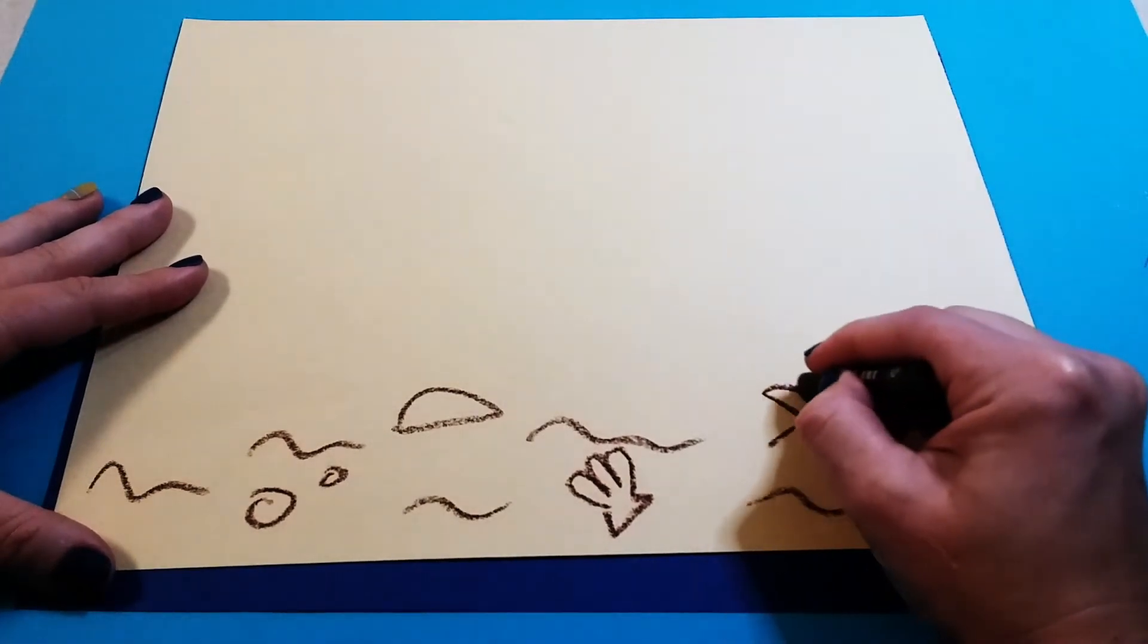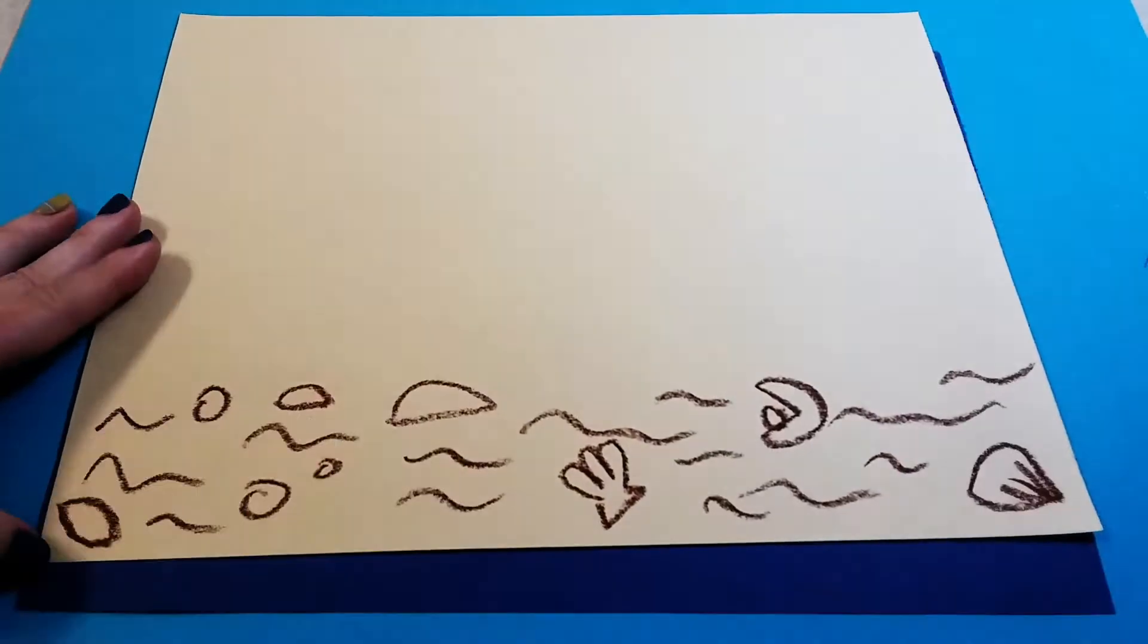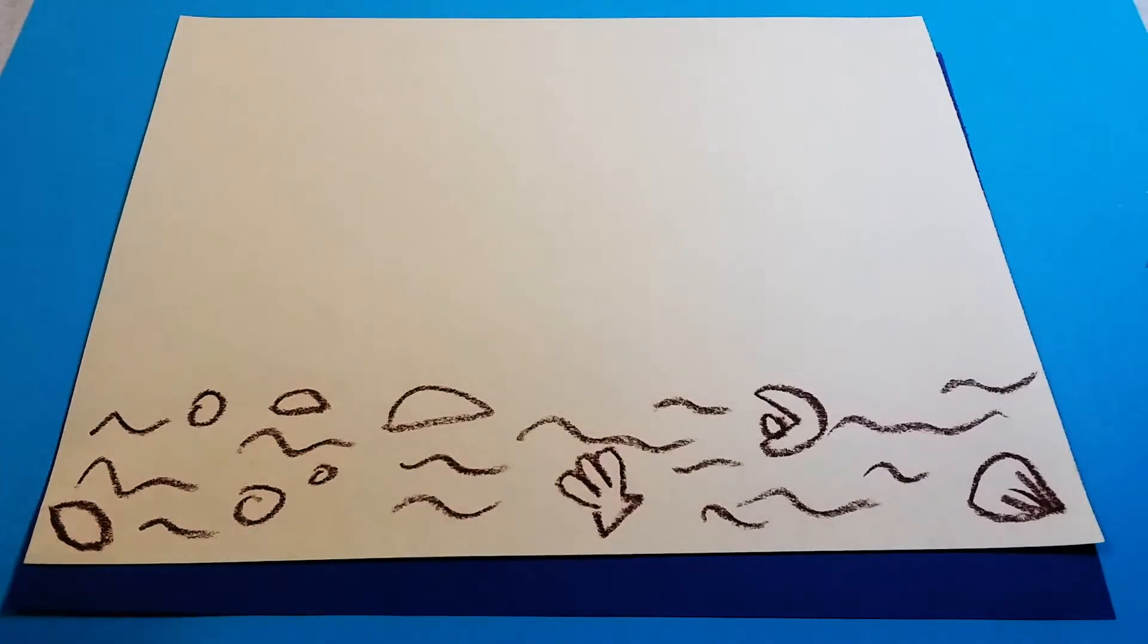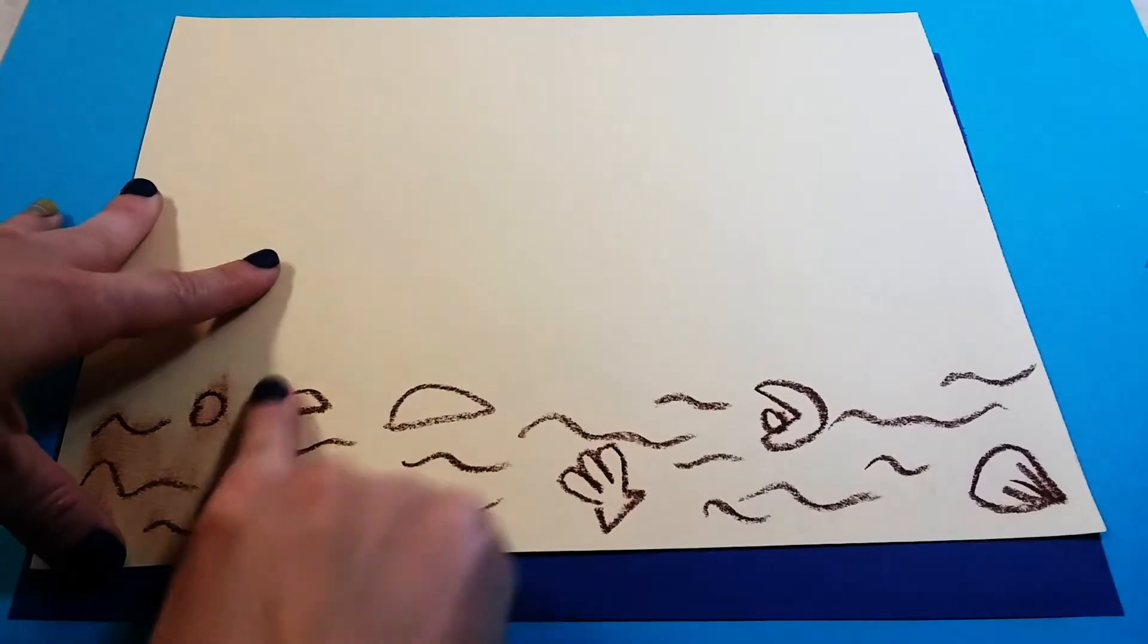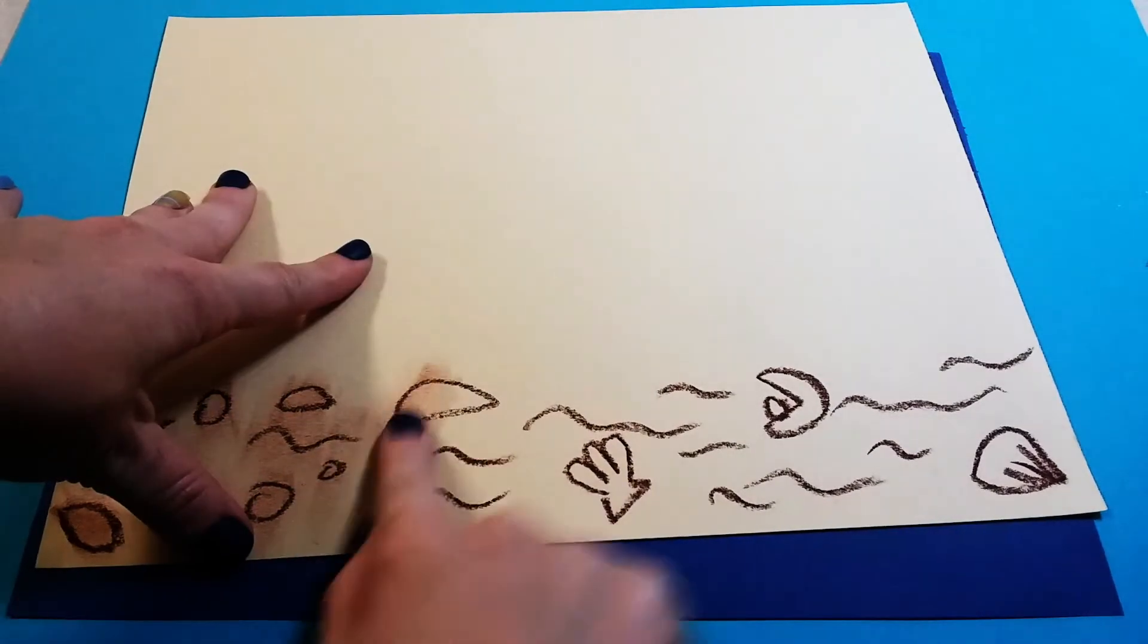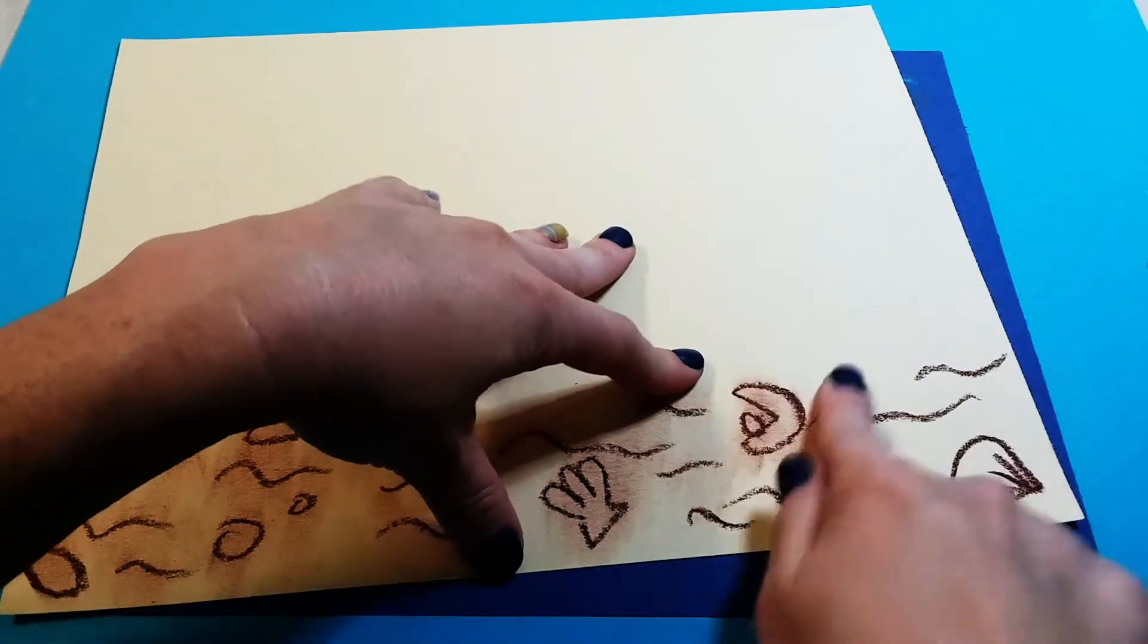Maybe I'll do a little clam. Could do a pearl. And once you have the bottom all decorated, again you're going to take your finger and just kind of smear it around to make it all mushed together and look like sand underwater.